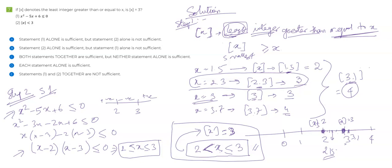Does this range match the range we need? Notice the value of x should be greater than 2 (strictly) for box of x to be 3. But from Statement 1, you're getting greater than or equal to 2. So if x becomes 2, then box of x will not be 3 — it will be 2. That means using Statement 1 alone, x could be 2 or x could be 3, giving different values of box of x. Statement 1 is not sufficient, and hence your answer cannot be A or D.